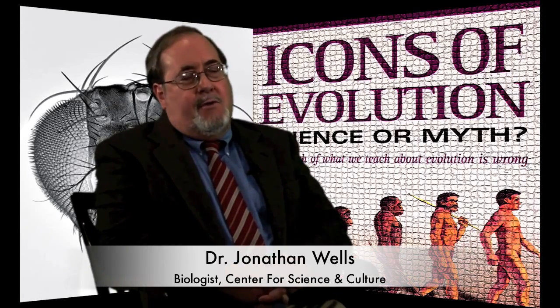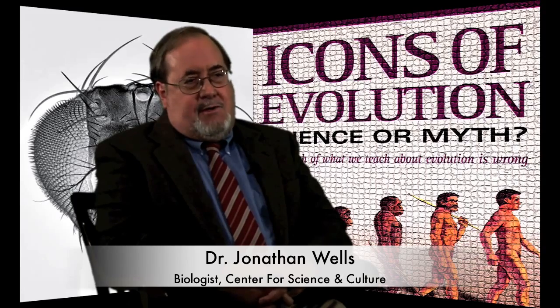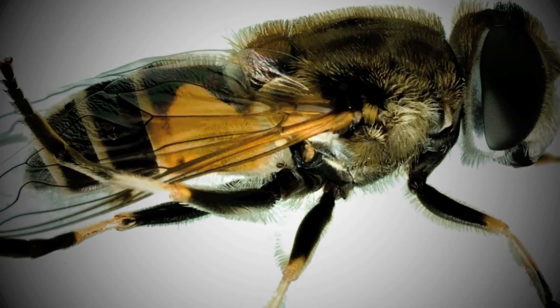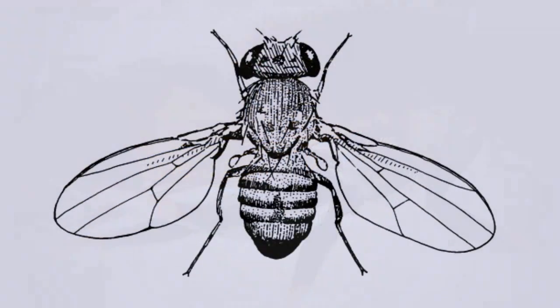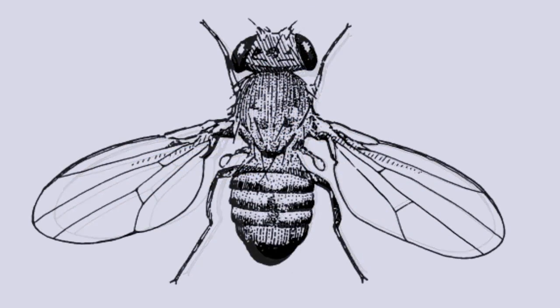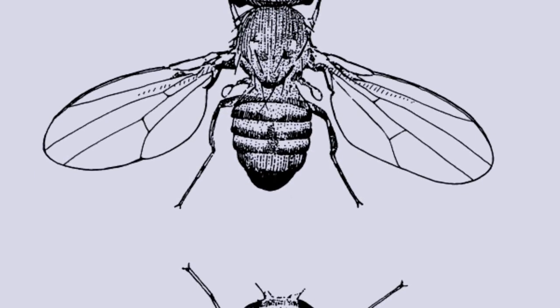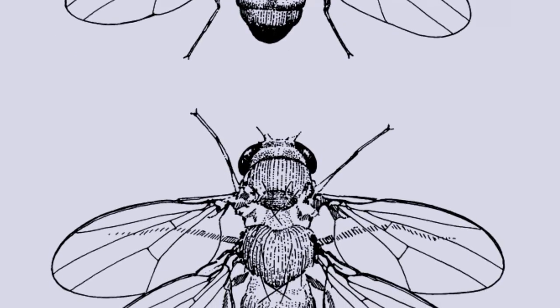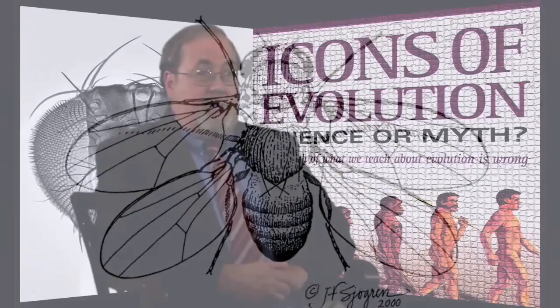One of the icons of evolution that I wrote about is the four-winged fruit fly. Fruit flies normally have two wings, and behind those wings are a pair of what are called balancers that vibrate, oscillate rapidly in flight to stabilize the fly's flight. But if you combine three mutations very carefully in a fruit fly embryo, you can produce a fruit fly with four normal-looking wings — two pairs. Ed Lewis did this and won the Nobel Prize for it, deservedly, because it showed us a lot about the developmental genetics of fruit flies.